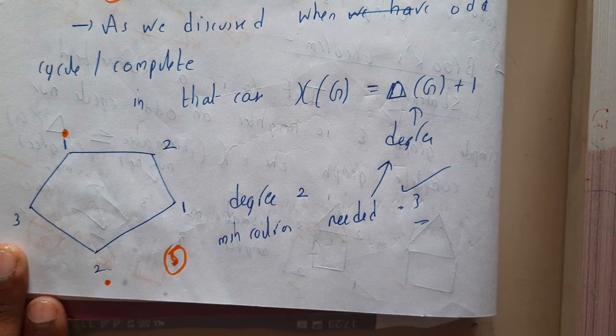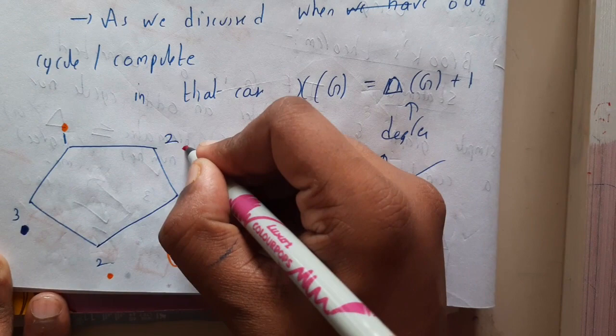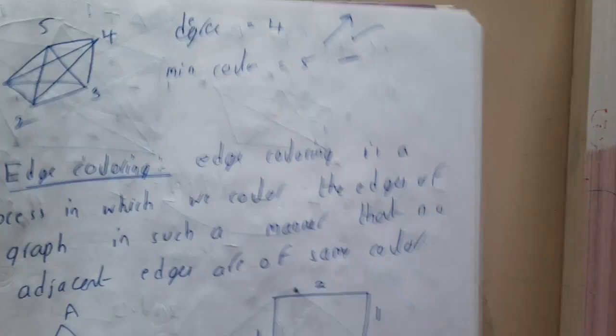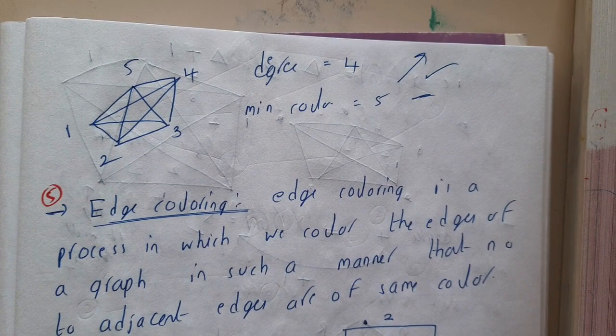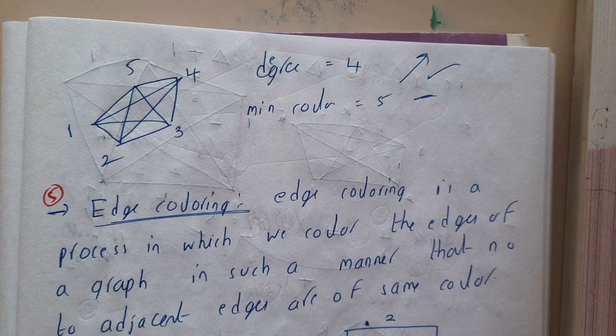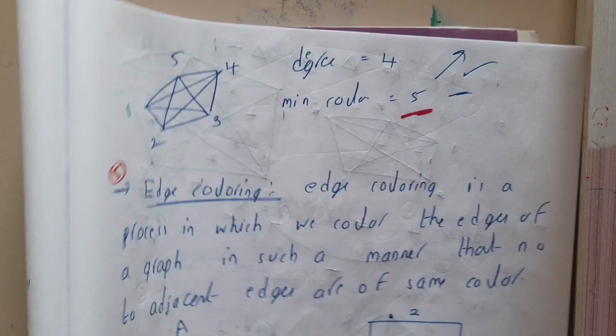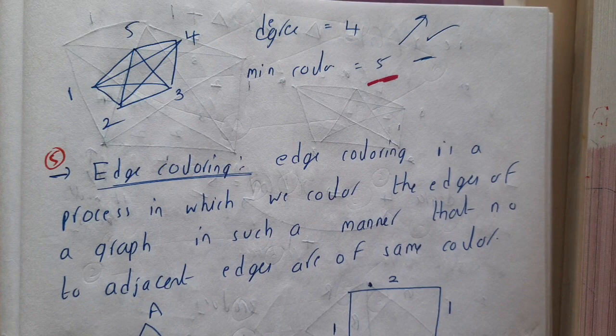For an odd cycle of length five, you can color with one color, then another, then one, then one, but the last vertex needs a third color because it's adjacent to both colors. So it takes three colors, which is the maximum degree plus one. For a complete graph, the degree is n minus one, so we need exactly n colors — for five vertices, we need five colors.